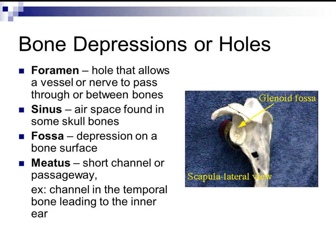Bone depressions and holes include: a foramen, which is a hole allowing a vessel or nerve to pass through or between bones; a sinus, which is an air space found in some skull bones that helps lighten the weight of the skull; a fossa, which is a depression on a bone surface — for example, the depression on the scapula that allows the humerus to sit inside, forming the shoulder socket. A meatus is a short canal or passageway — for example, the canal in the temporal bone leading to the inner ear.